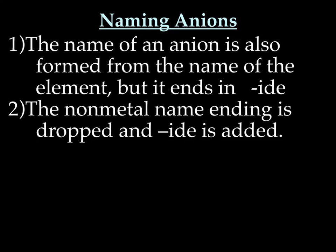Let's learn how to name anions. Naming anions is slightly more difficult than naming cations, but not much. The name of the anion also comes from the name of the element, but we change the ending — we drop the ending to -ide. The non-metal name ending is dropped and -ide is added.